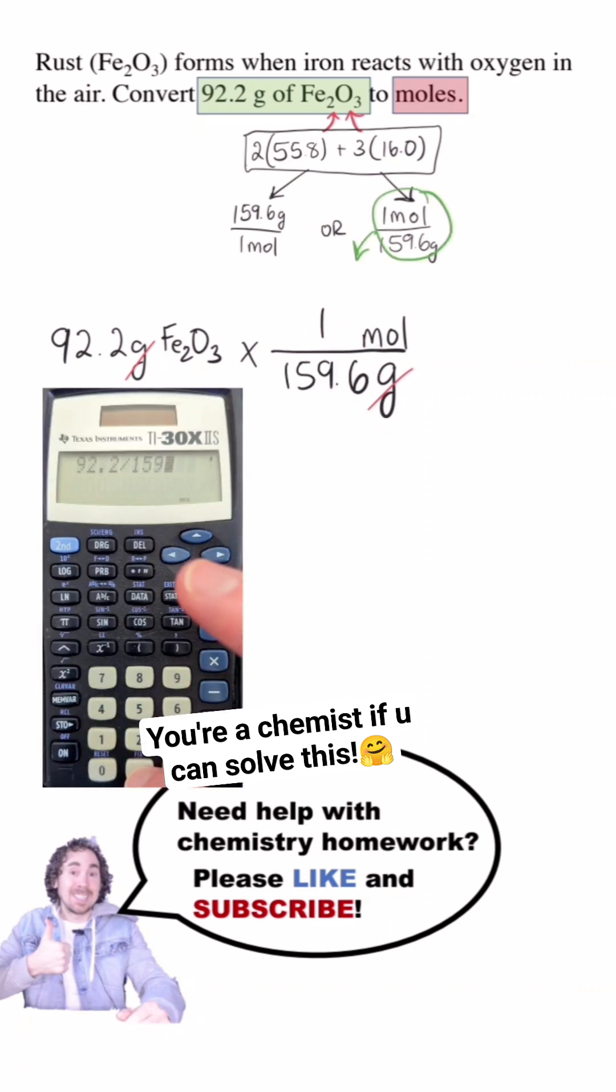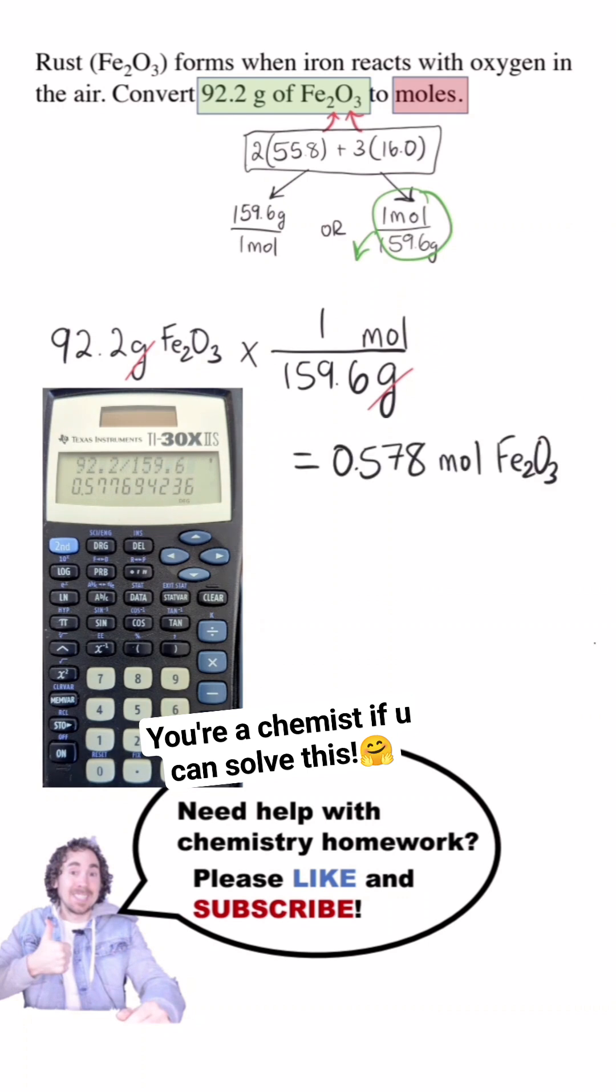1 over something like this just means to divide by. So 92.2 divided by 159.6 gives 0.578 moles.